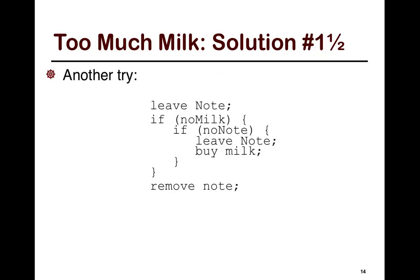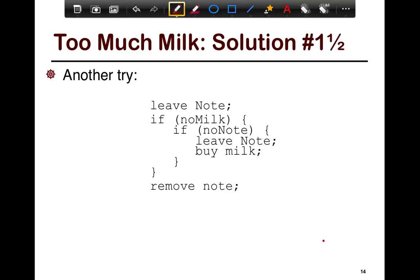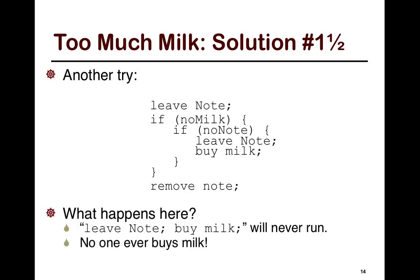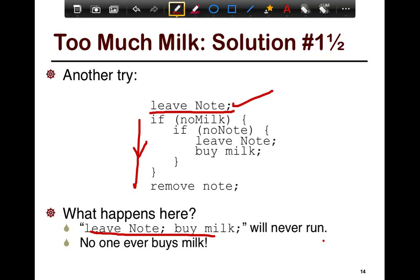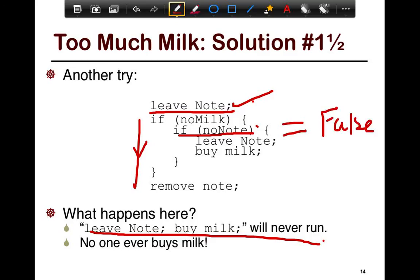What about solution one and a half? Another try: leave the note before we even check if there's no milk. The difference is we leave a note before entering any check. What happens is that 'leave note, buy milk' will never run — no one ever buys the milk because I've already left a note, and 'if no note' is always false. So that's a pretty bad idea — now no one ever buys the milk. Previously there was too much milk; now there is no milk.